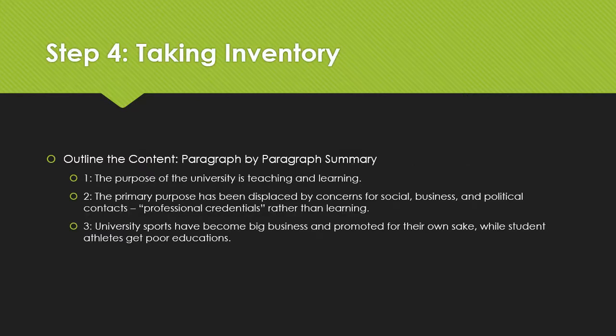We did a simplified version of reading and annotating, and likewise I'm not going to go through the entire process of taking inventory — just to give an overview of how this process works. After reading and annotating, you want to start organizing your ideas into some coherent form. First, you can outline the content of the article by providing a paragraph-by-paragraph summary of what's being stated. I won't go through the whole article, but I'll go through the first ten or so paragraphs.